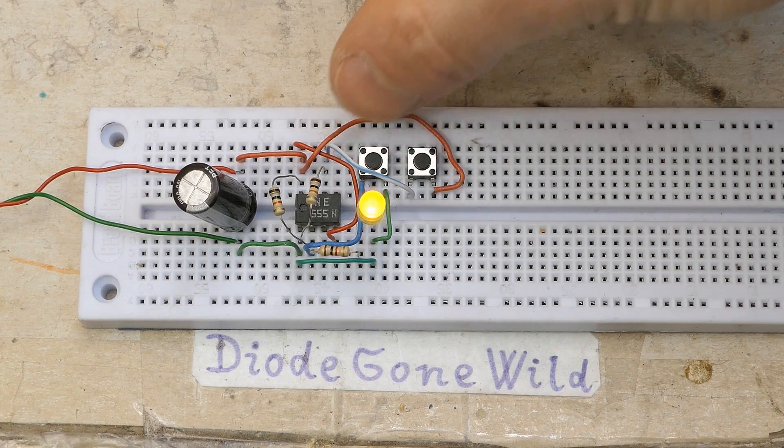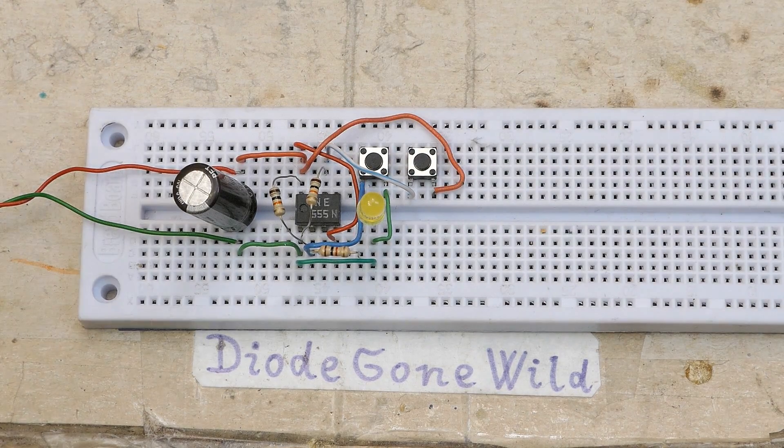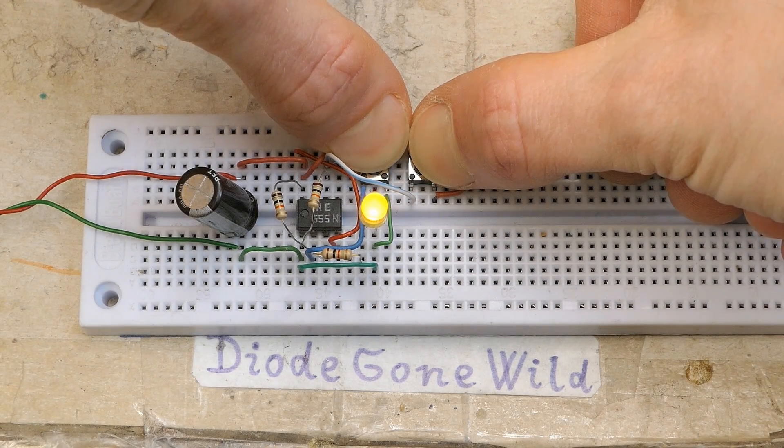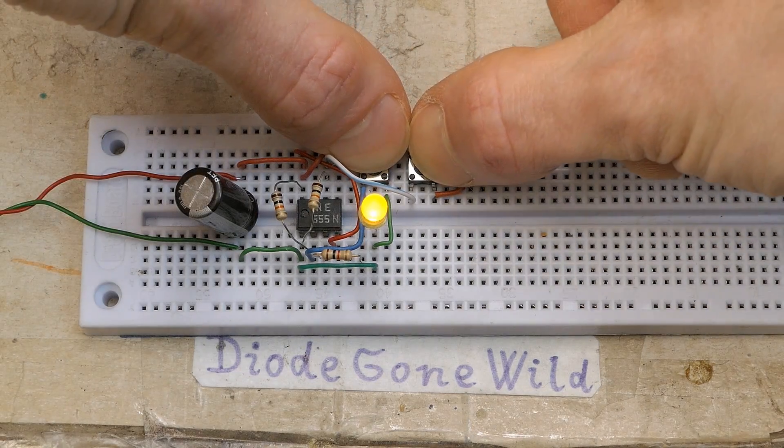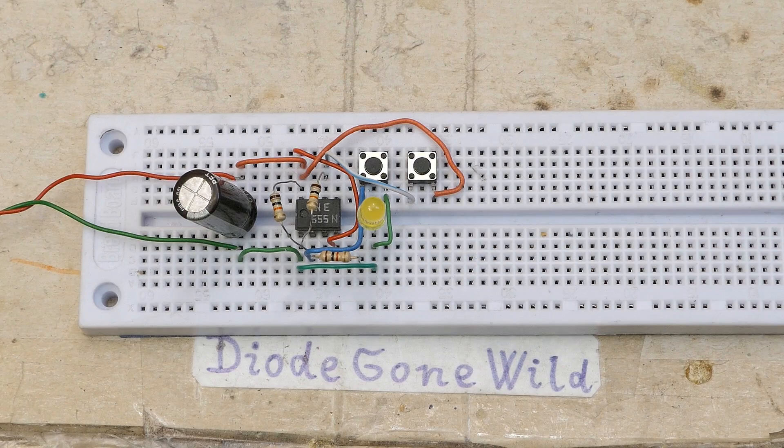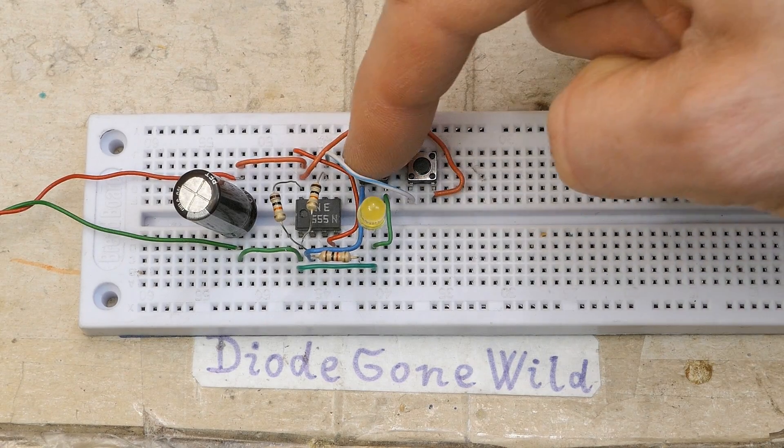It works more or less the same. I can turn it on and off. There's just one difference in the behavior. When you press both it's actually on, because now the on button has a priority. And again when you press both and release them, the final state depends on which one you release second. So these are the two versions of the two button on-off circuit with a 555 chip.